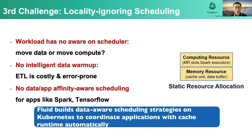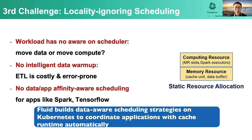The third challenge is inefficient workload scheduling. The current Kubernetes scheduler is not aware of data location, so it will not reuse existing cache information at the cluster level, and it is also not able to intelligently prefetch data for workloads before a run starts. To solve this problem, we designed a data-aware scheduling strategy on Kubernetes to coordinate applications with the cache runtime automatically.